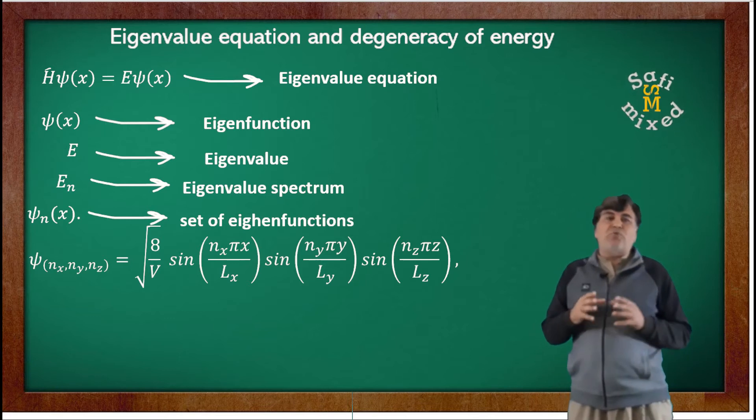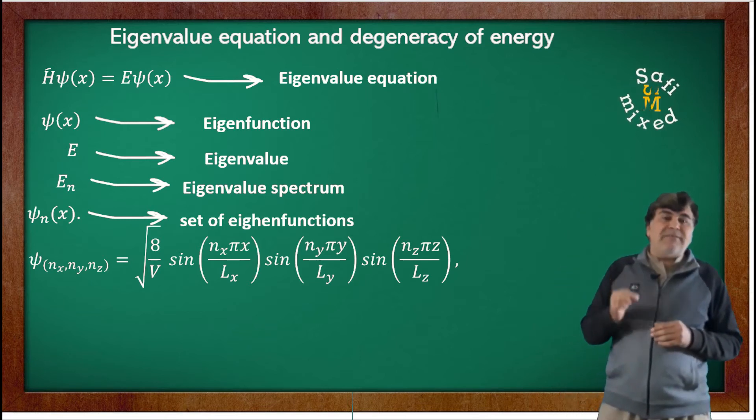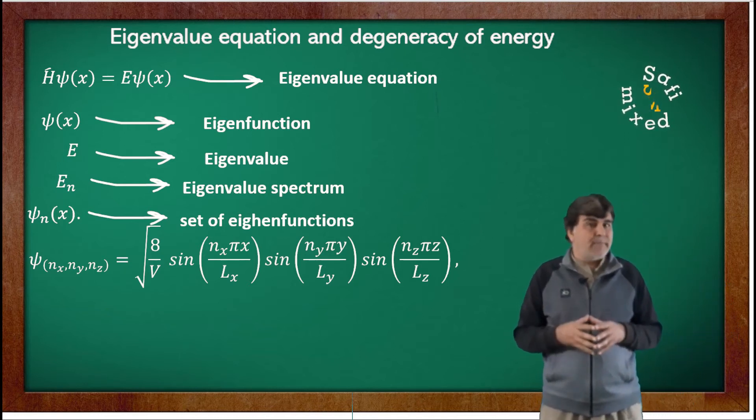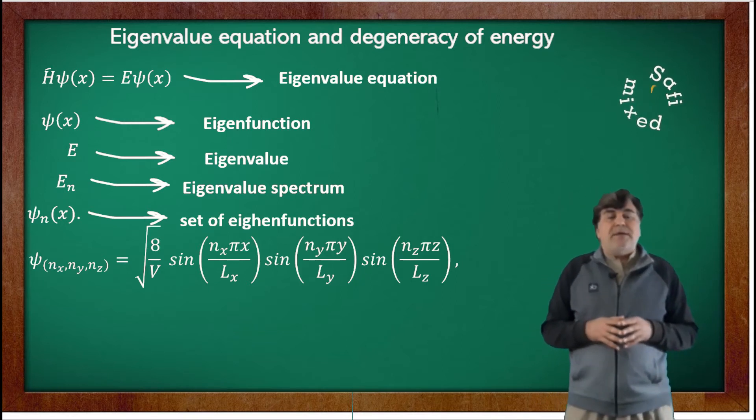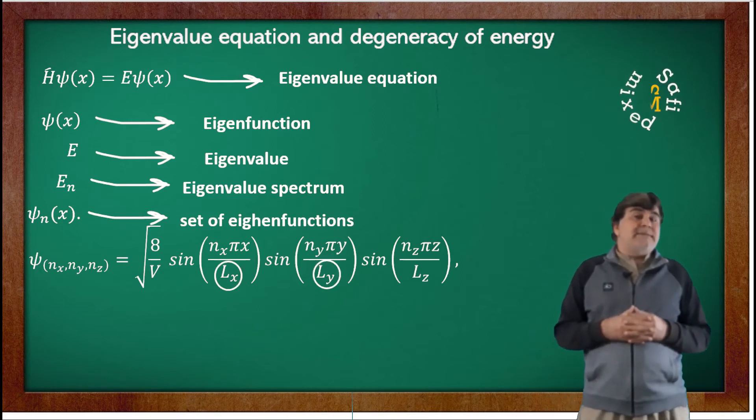It's normalized to √(8/V). In this equation, L_x, L_y, and L_z are the lengths of the box along the three Cartesian axes.